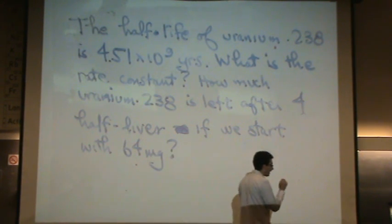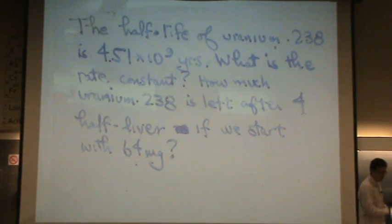Okay, can I read it? The half-life of uranium-238 is 4.51 times 10 to the 9 years, so it's really long. What is the rate constant? How much uranium-238 is left over after 4 half-lives if we start with 64 milligrams?